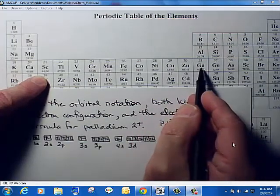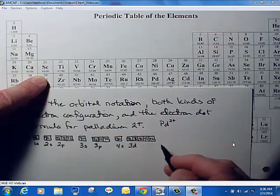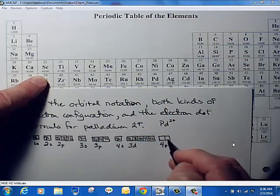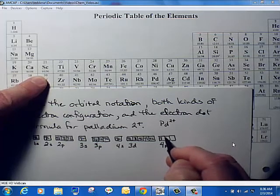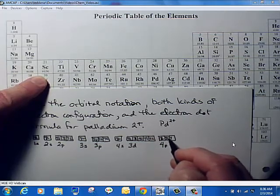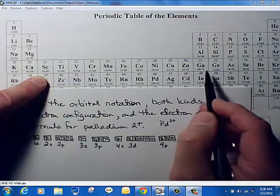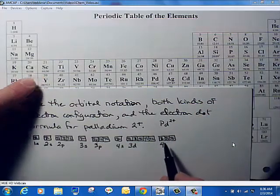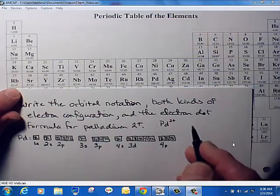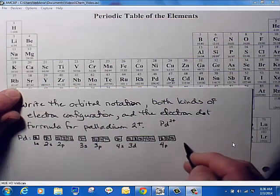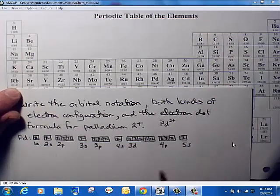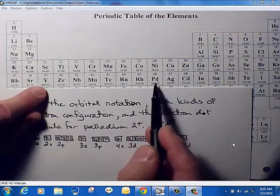Then we're back into 4 when we get to gallium, and that's 4p. Six elements, three orbitals, two electrons in each orbital. And then we go to 5s here, two electrons in 5s. And palladium's right here.